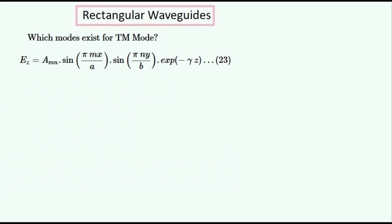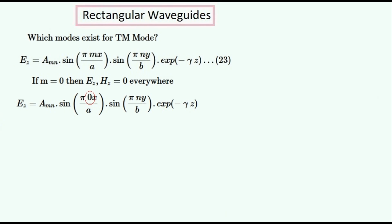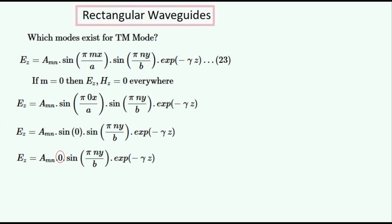Now it's time to calculate which modes exist — that is, what values of M and N can this equation exist for. If M is equal to zero then EZ is equal to zero everywhere. When we substitute M equals zero into this equation we get an equation containing a sine of zero term, which gives us a group of expressions multiplied by zero, so EZ is equal to zero. Since EZ and HZ are both zero everywhere, and because the rest of the fields like HX and EY are equal to sums of EZ and HZ, then H and E will be zero everywhere in the waveguide. So the mode M equals zero cannot exist in the waveguide.